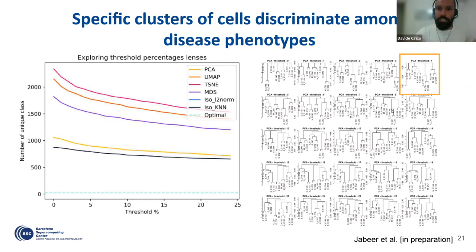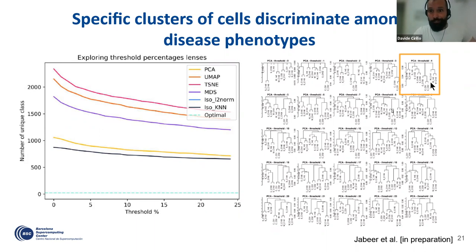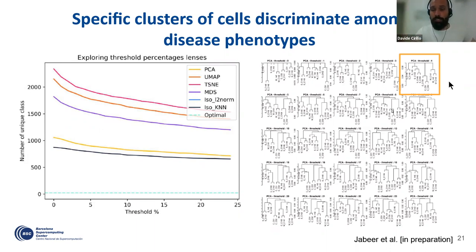Exactly. So the next step — I don't have the slide — but basically, the next step is to look at the genes, find the genes that are enriched, especially in those classes of cells. We are not there yet, but it's the next step.